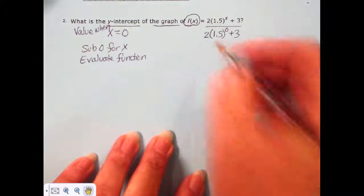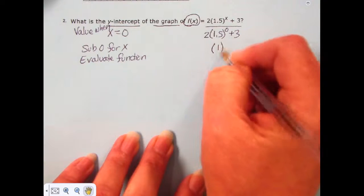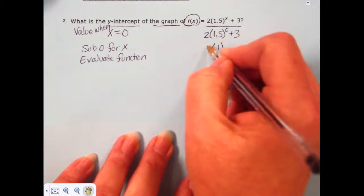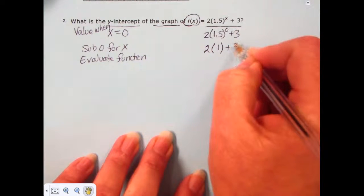Anything to the zero power is 1. I don't care what's in those parentheses, anything to the zero power is 1. Then we bring everything else that was in the expression down.